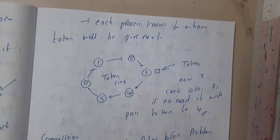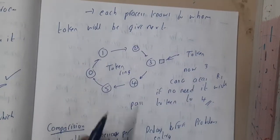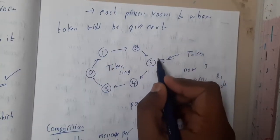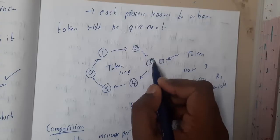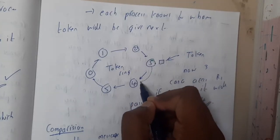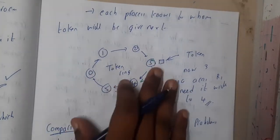If you just take a small example, each processor knows who to give the token next. Here we are having a ring and three is having the token. If three needs the resource, it will use it, else it will pass it to four. Same operation at four and this continues continuously. So there is less chance of starvation here.